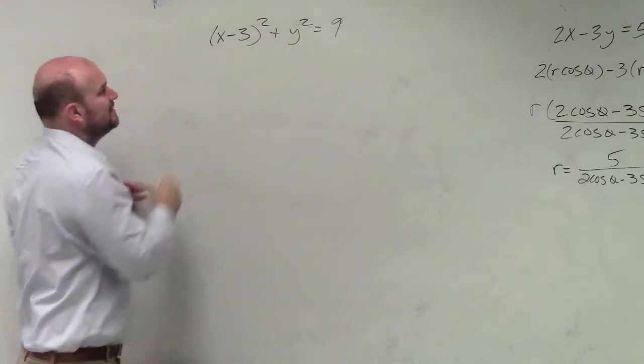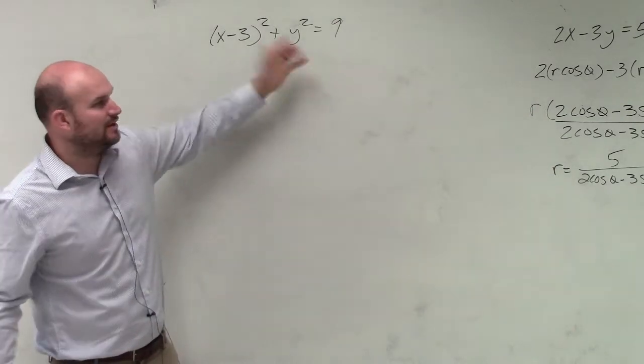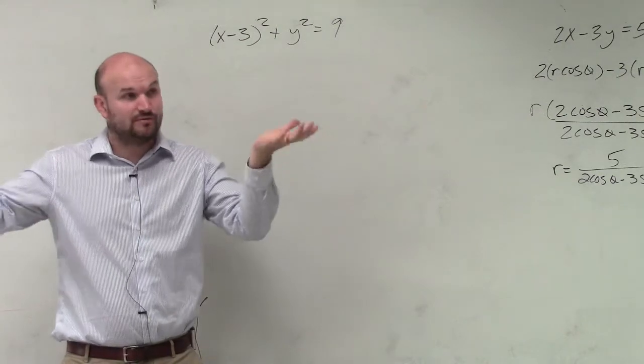Because the thing is, we have a y squared, but we don't have an x squared, right? And if we had y squared and x squared, we know that would equal r squared.